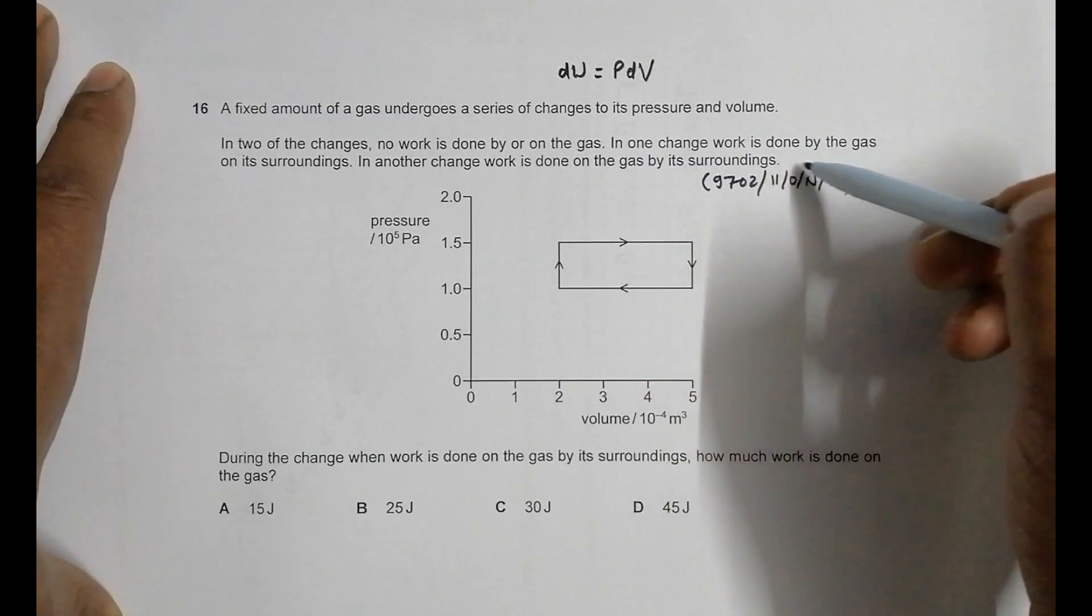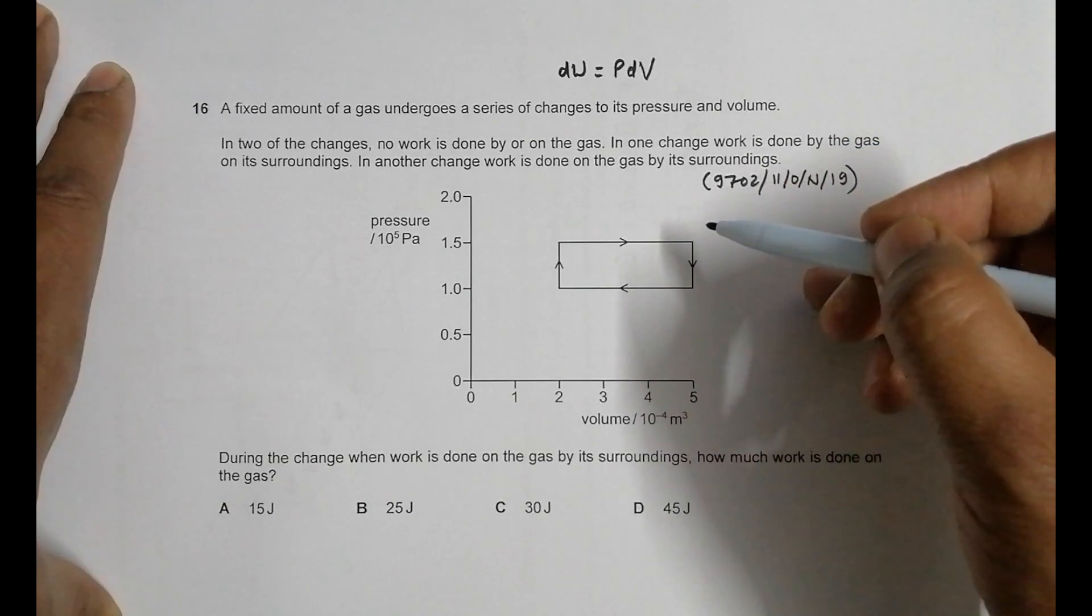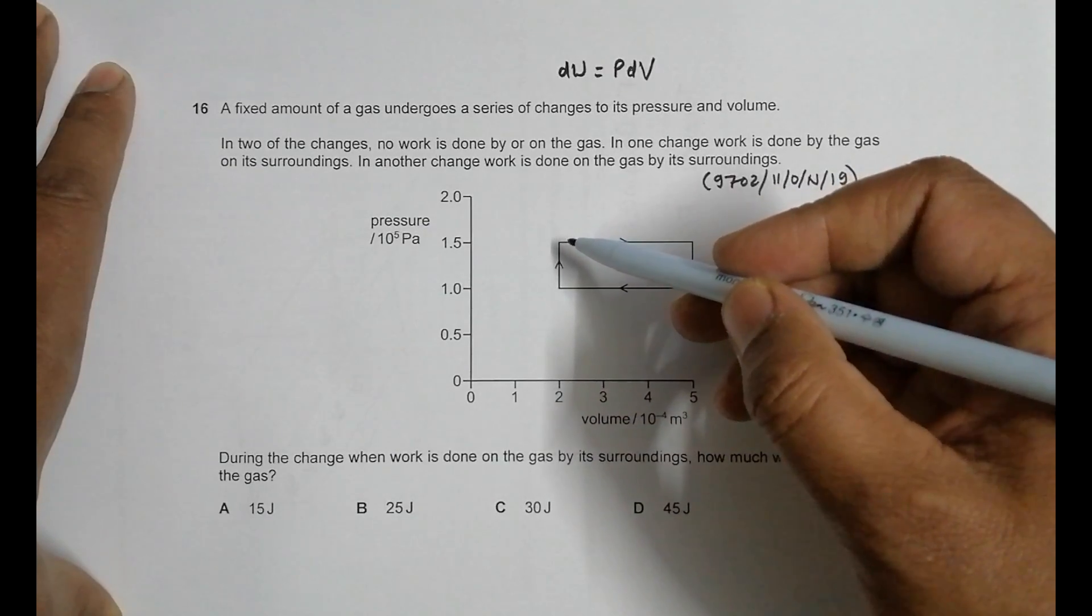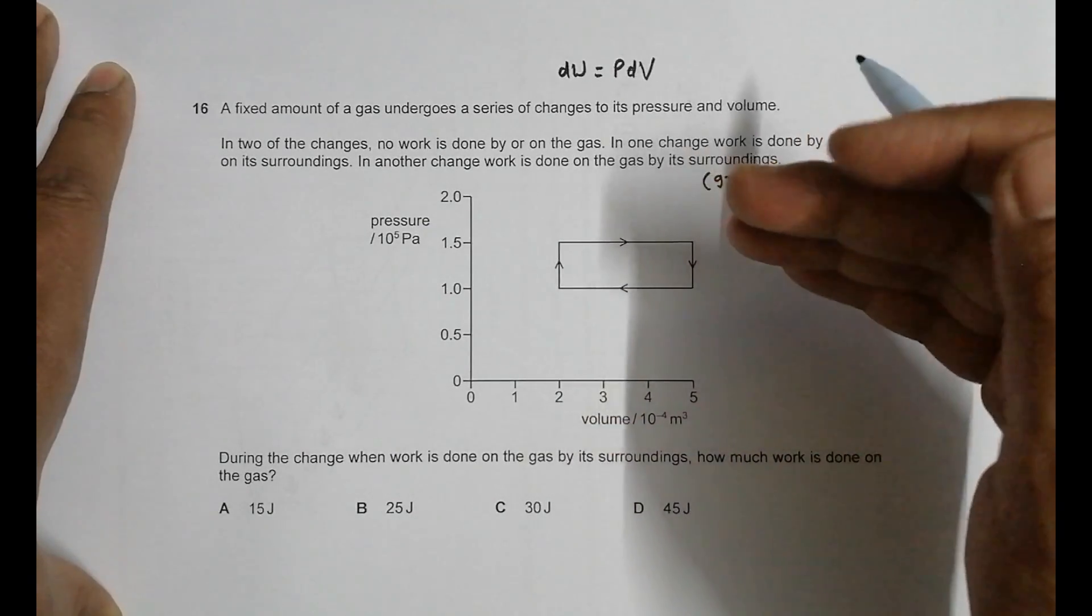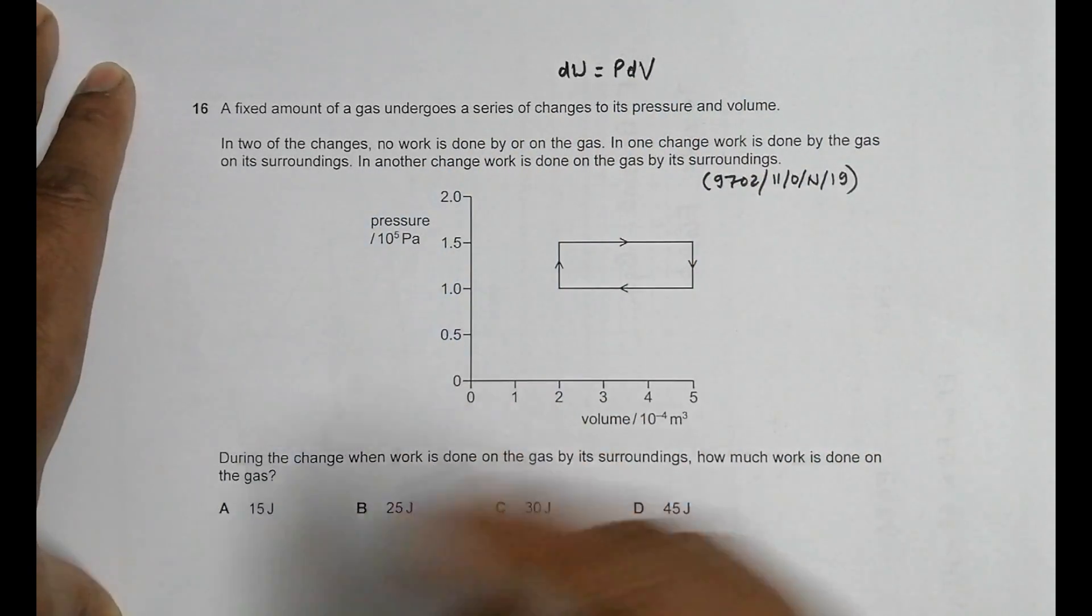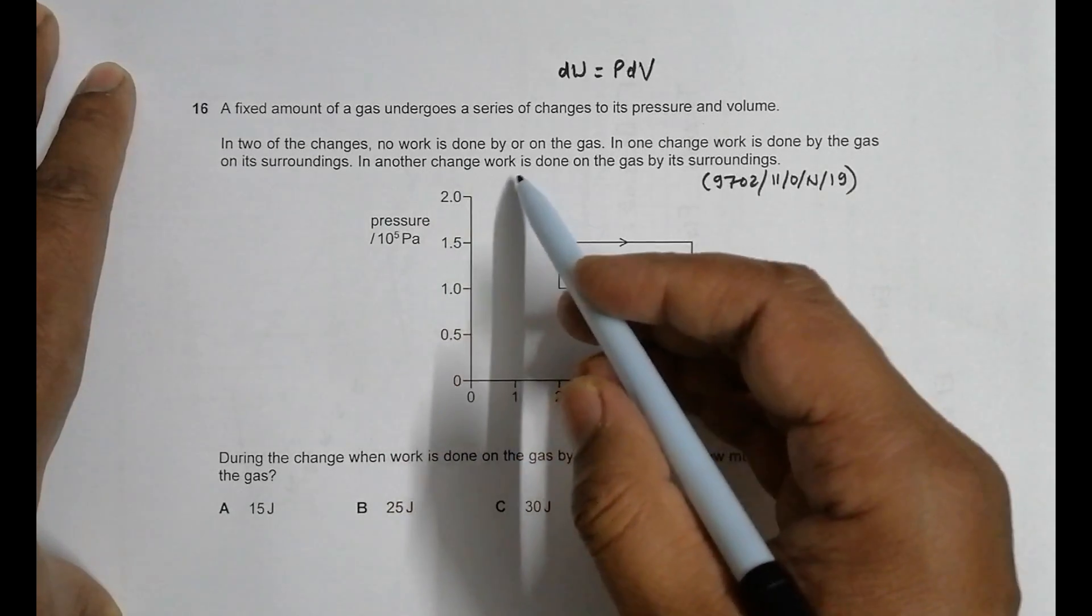In one change, work is done by the gas on its surroundings. This change is because pressure is constant and volume increases. Volume increase means the surrounding air has been pushed backward, so work is done on the surroundings.